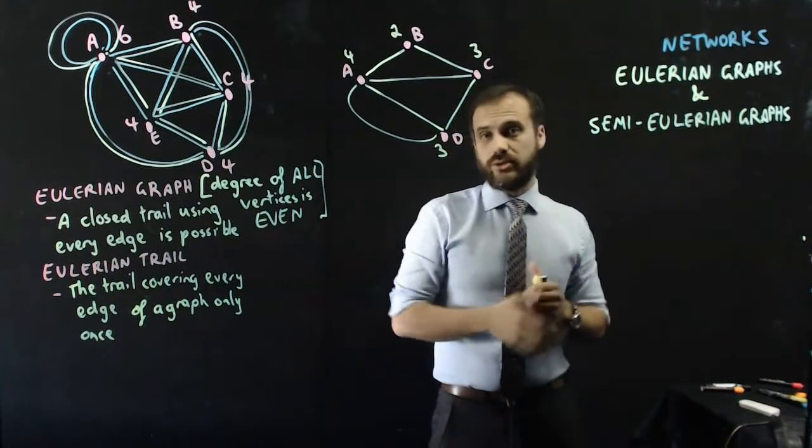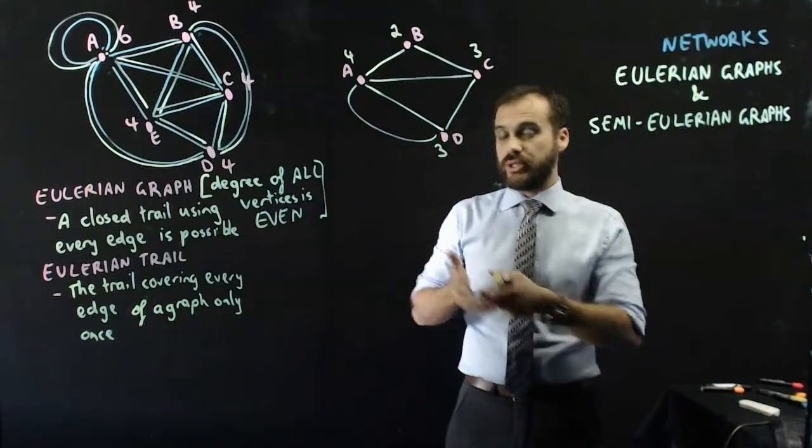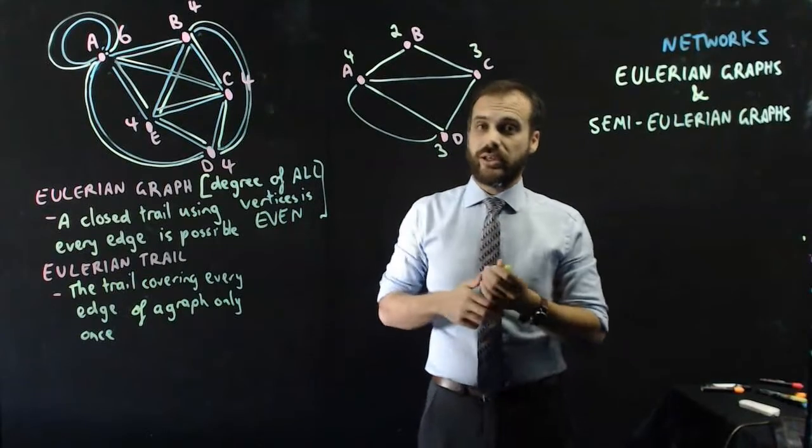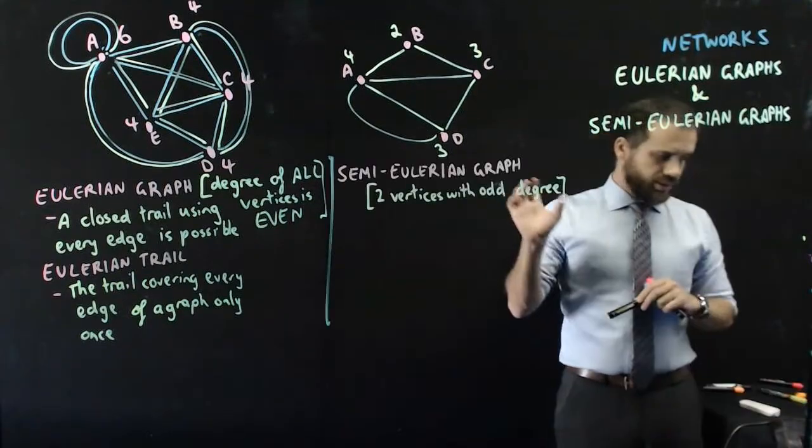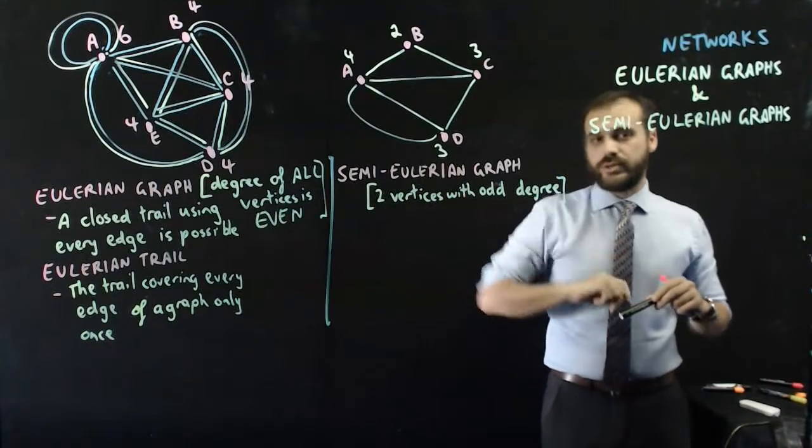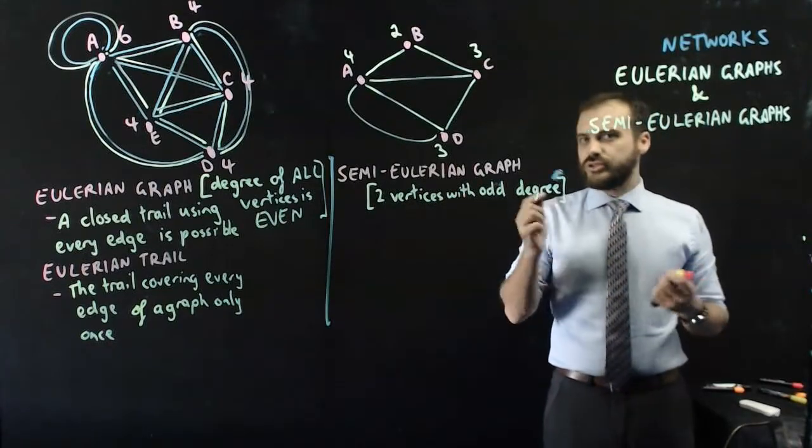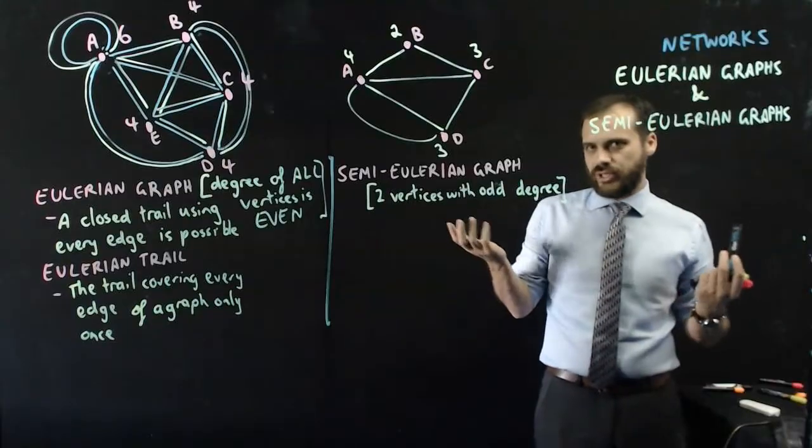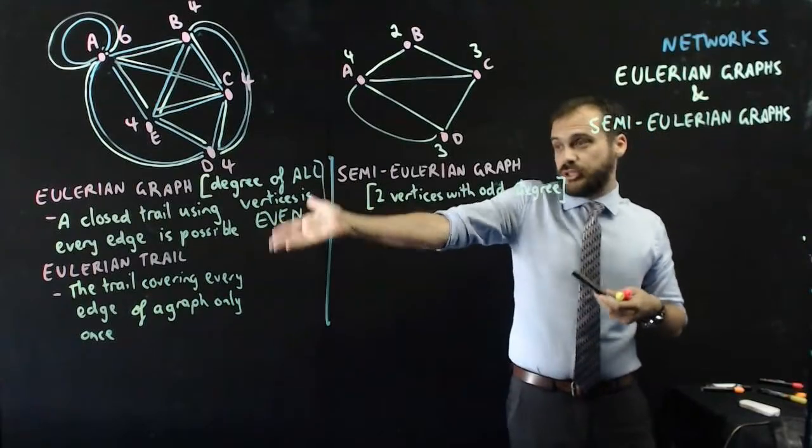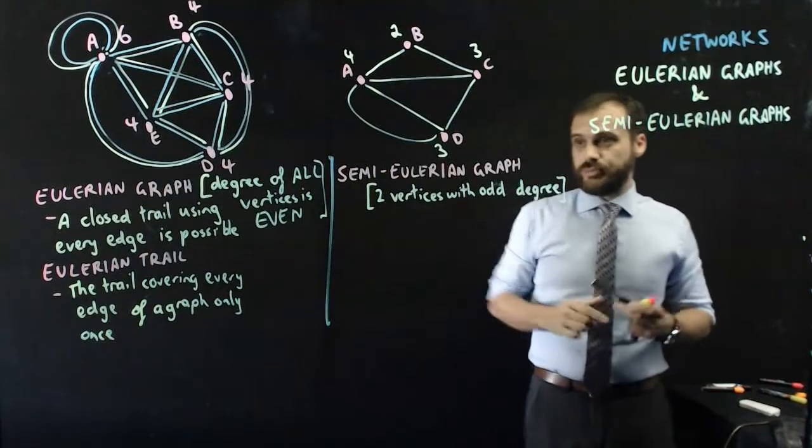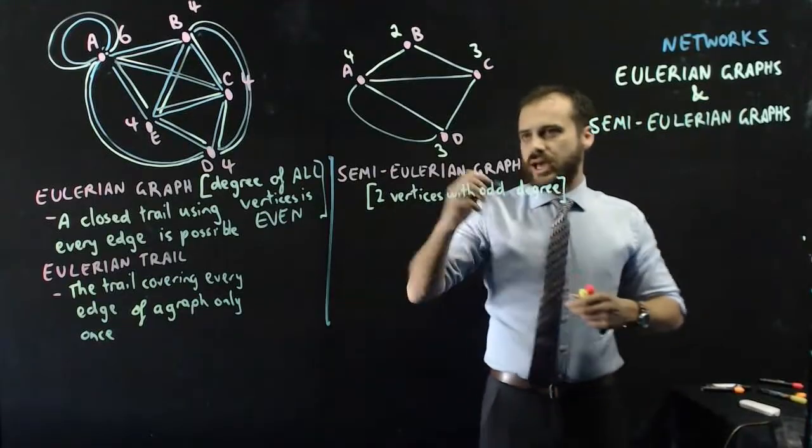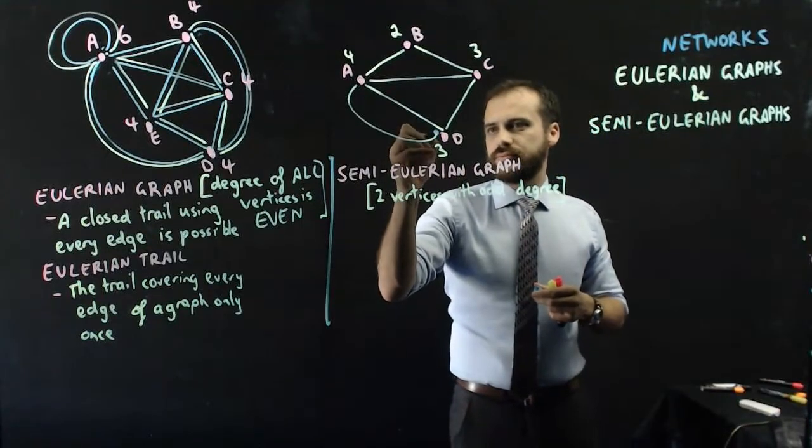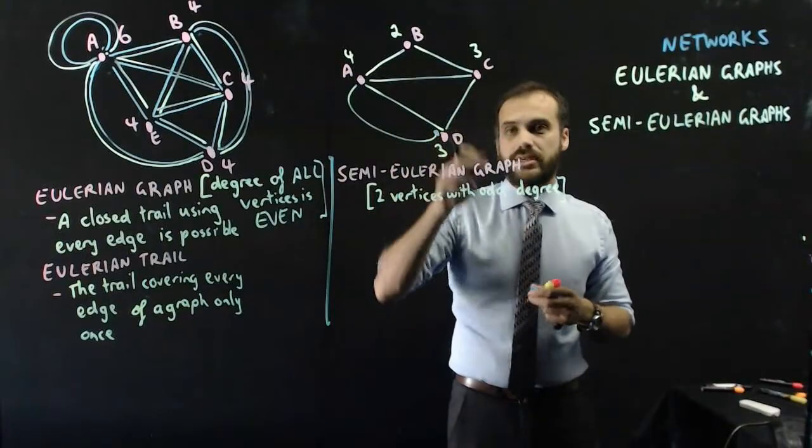But you are going to be able to do a semi-Eulerian trail because this is a semi-Eulerian graph. So a semi-Eulerian graph has two vertices with odd degree and you can do something special in a semi-Eulerian graph, perhaps not as special as this but pretty special. You can start at an odd point, so D or C, but I'm going to start at D.